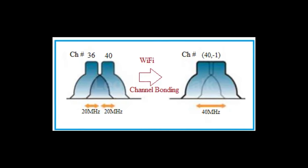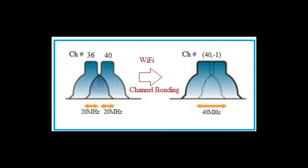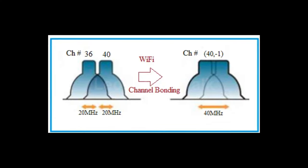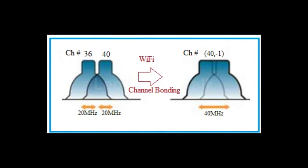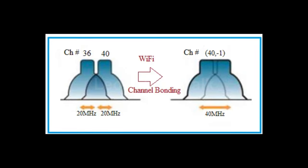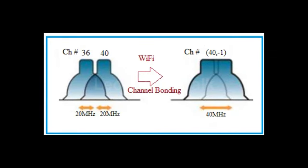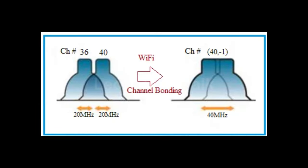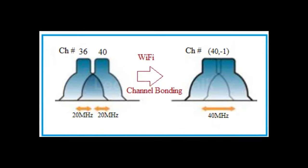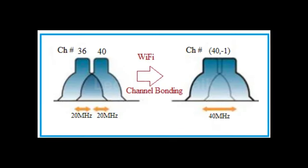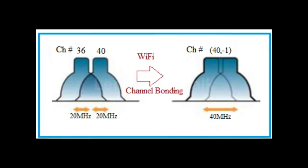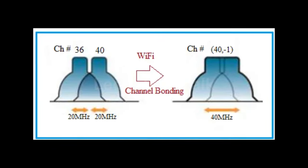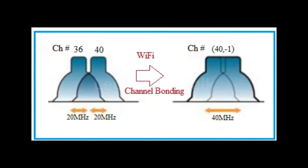Channel bonding has become a very useful mechanism for accommodating growing Wi-Fi data capacity requirements. To improve the network access rate of wireless terminals, the working bandwidth of radio channels can be increased by channel bonding. For example, two 20 MHz channels can be bonded into a 40 MHz channel, so that the bandwidth of the data transmission channel is doubled theoretically, and the wireless access rate is also doubled. If two 40 MHz channels are bonded, the wireless network rate is also doubled, and so on.